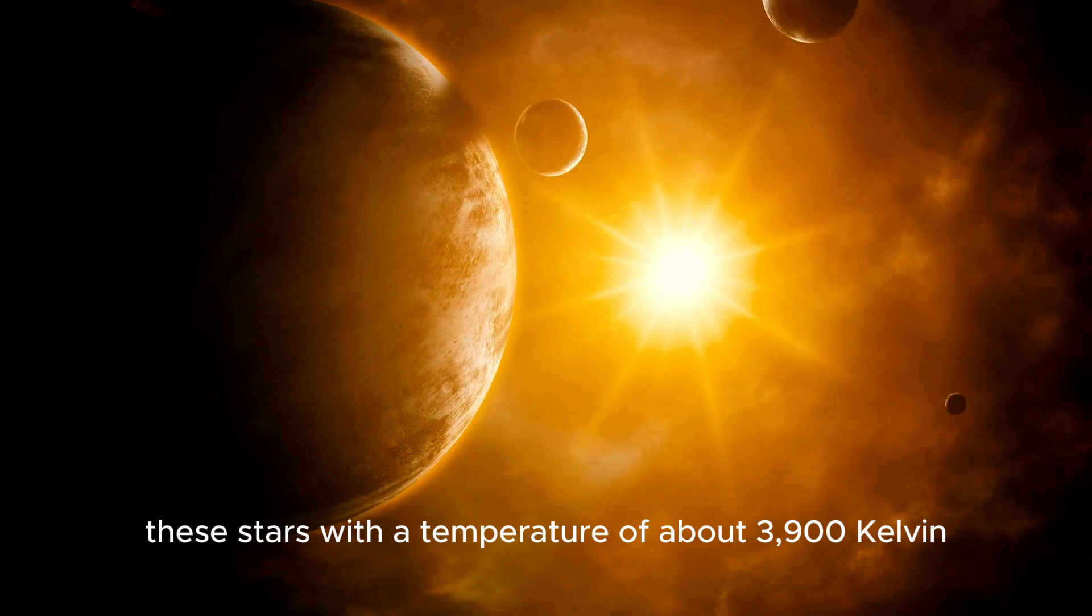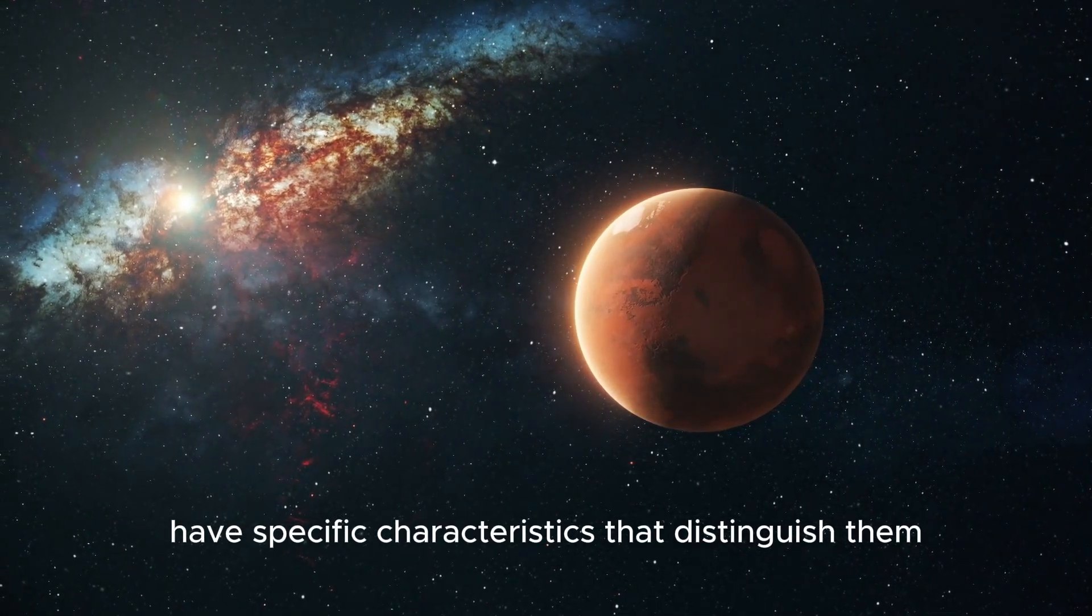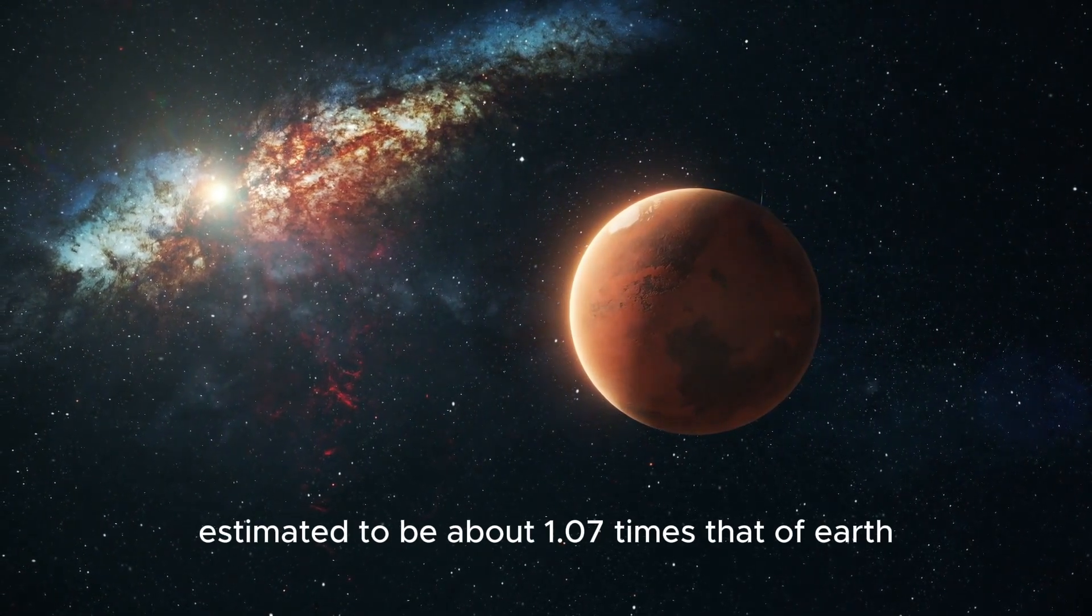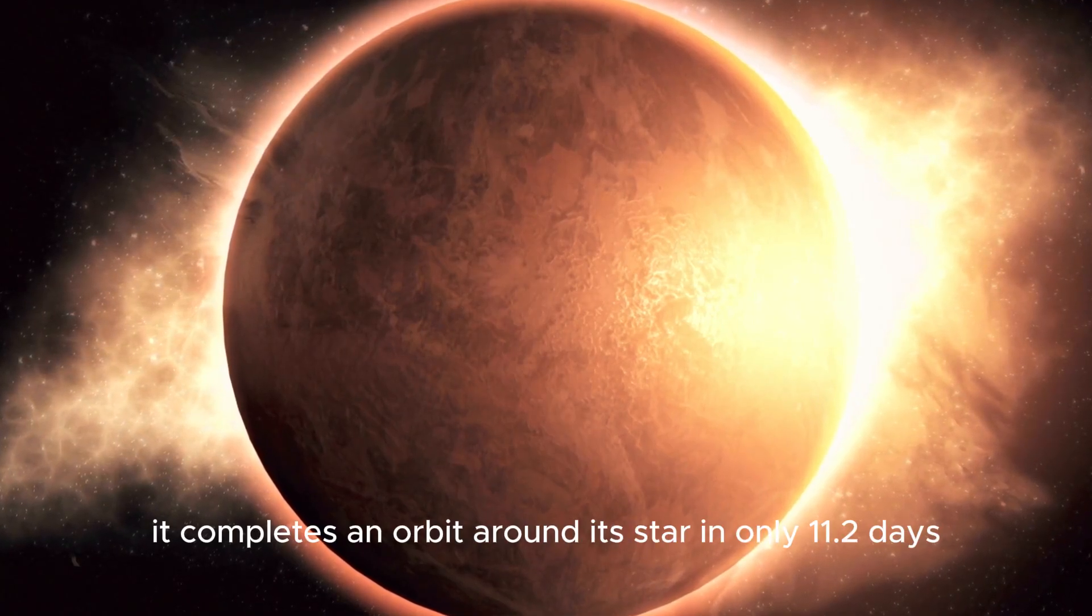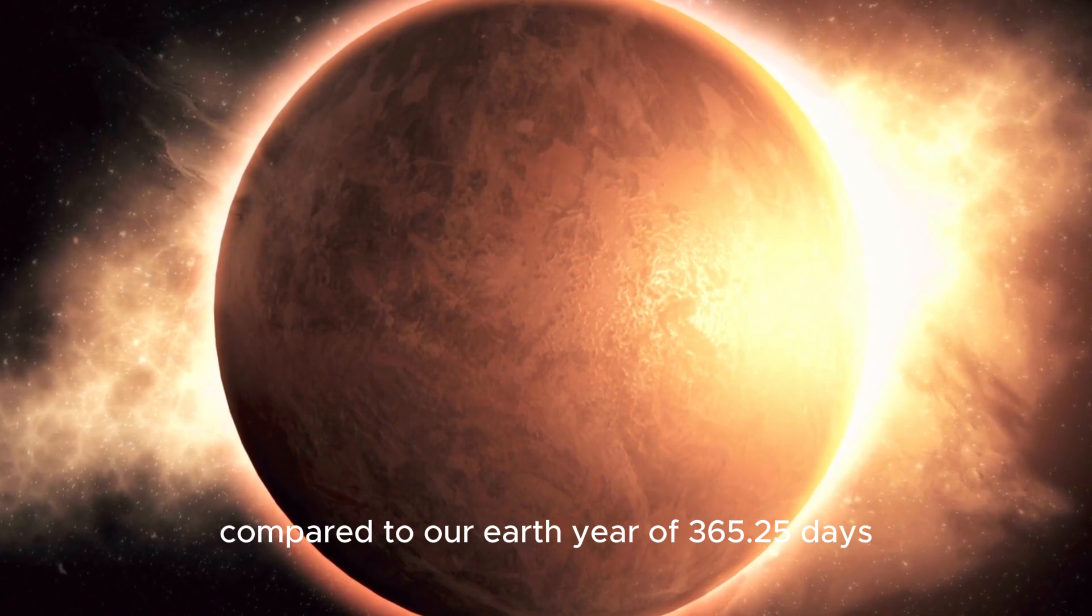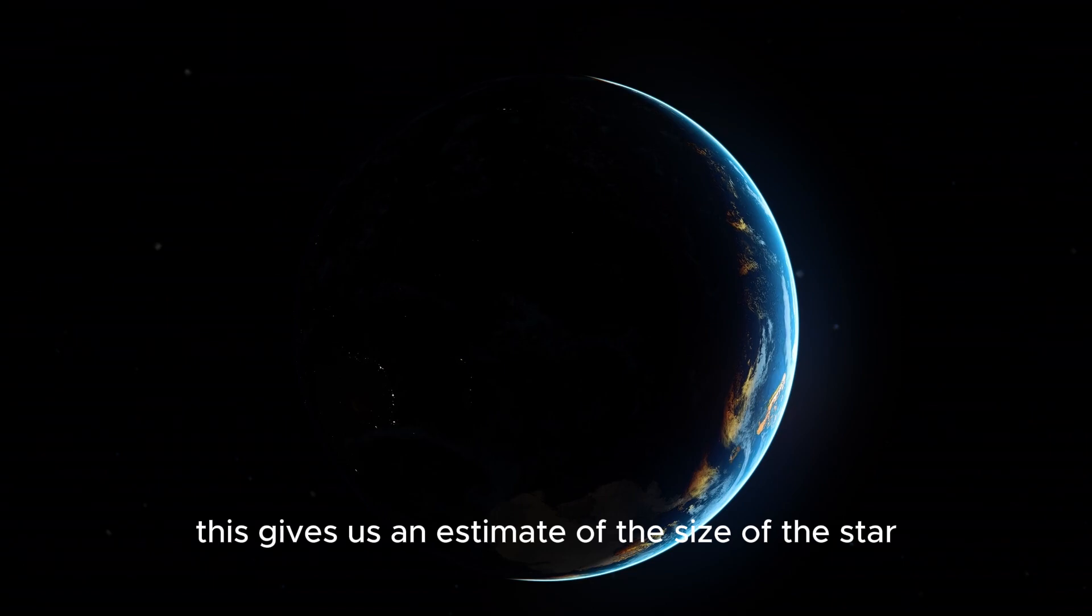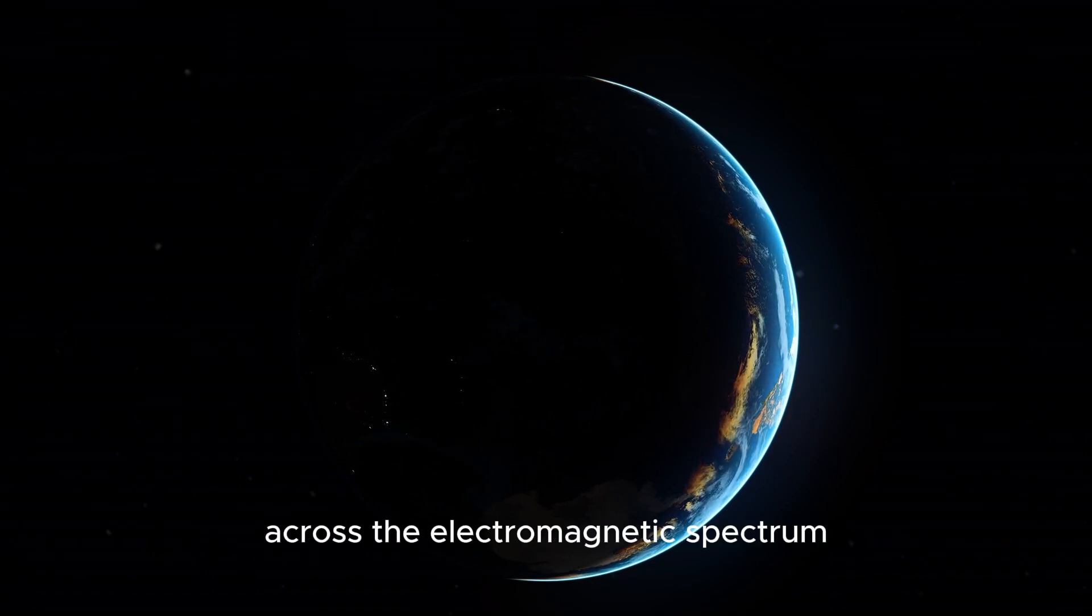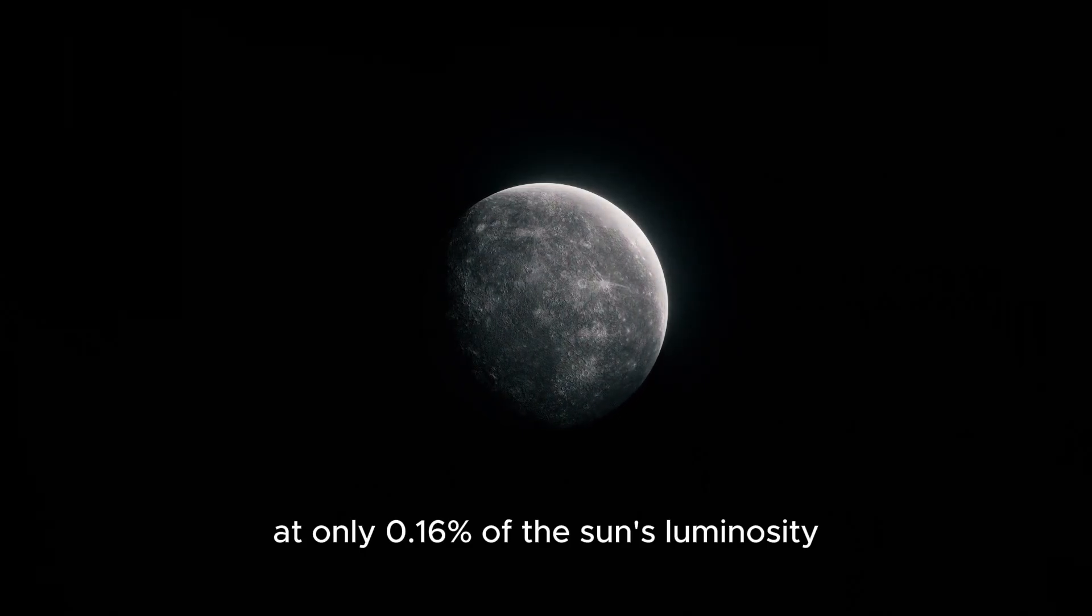These stars, with a temperature of about 3,900 Kelvin, have specific characteristics that distinguish them. As for Proxima b, its mass is estimated to be about 1.07 times that of Earth. Remarkably, it completes an orbit around its star in only 11.2 days, compared to our Earth year of 365.25 days. This gives us an estimate of the size of the star orbiting Proxima b. The star's luminosity is surprisingly low across the electromagnetic spectrum, at only 0.16% of the Sun's luminosity.